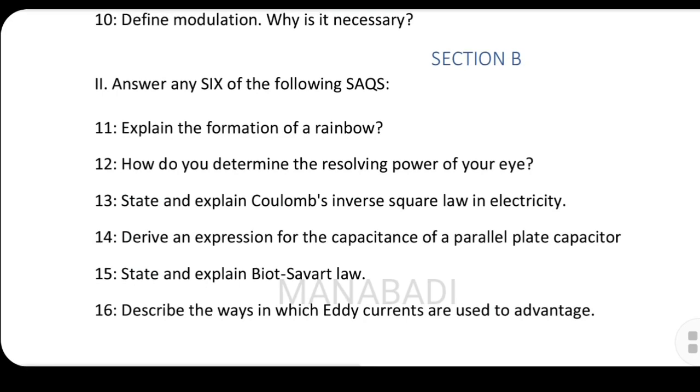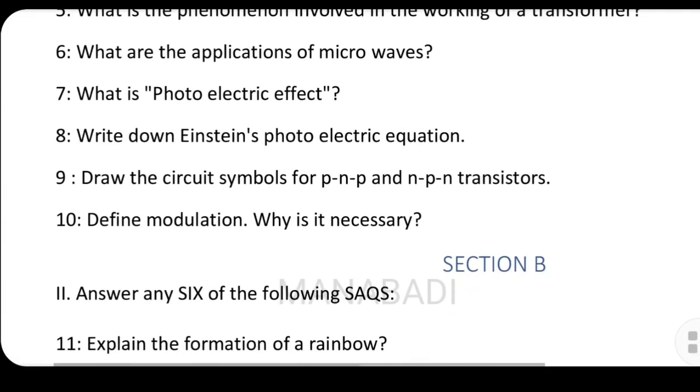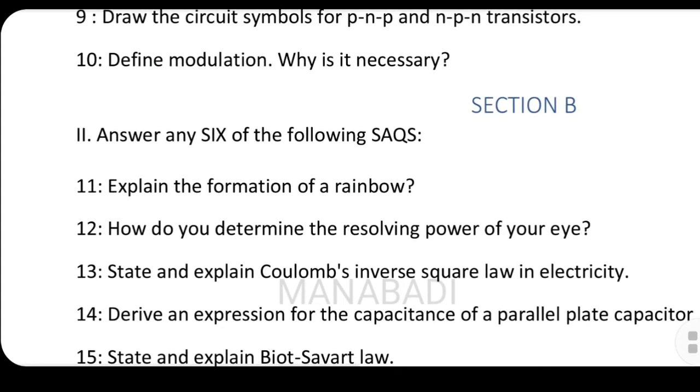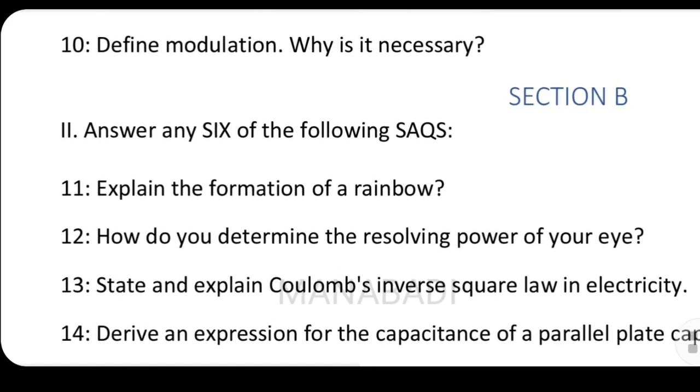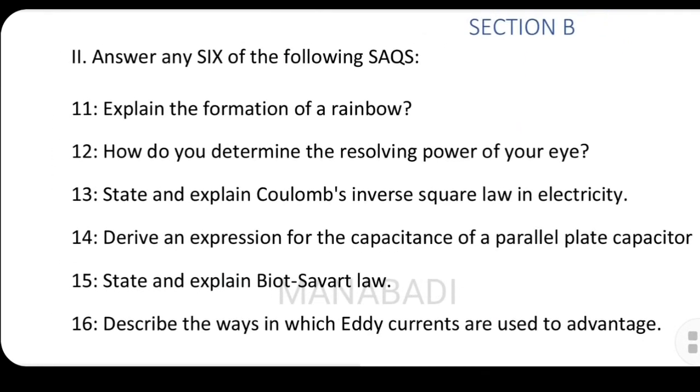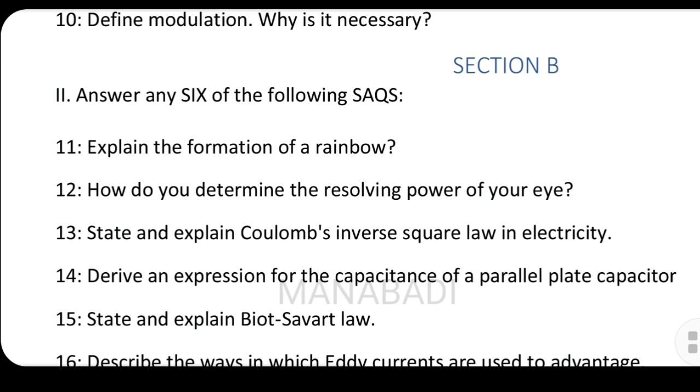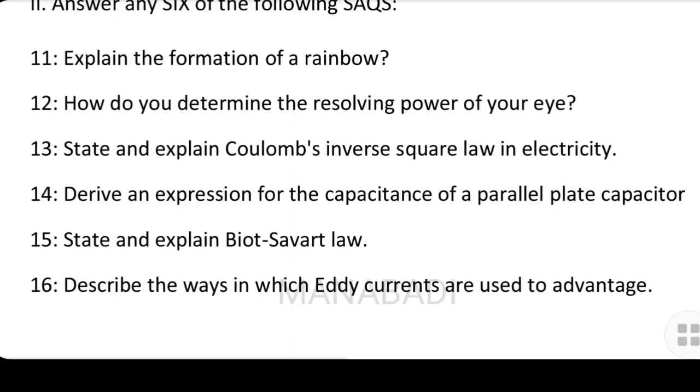Explain the formation of a rainbow. Rainbow formation involves total internal reflection, dispersion and refraction. How do you determine the resolving power of your eye? State and explain Coulomb's inverse square law in electricity. Derive the expression for the capacitance of a parallel plate capacitor. These answers are important questions. You should grip these well and draw diagrams properly. State and explain Biot-Savart law. Describe the ways in which eddy currents are used to advantage.